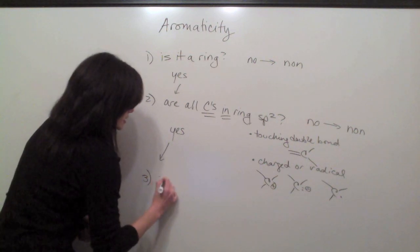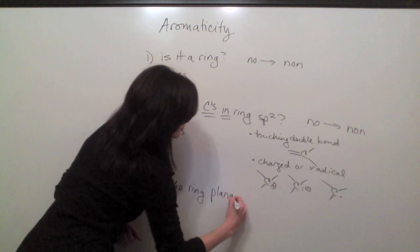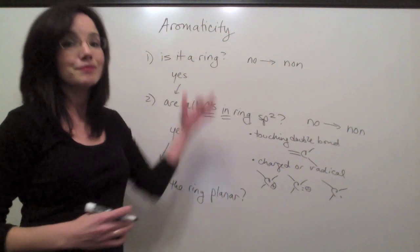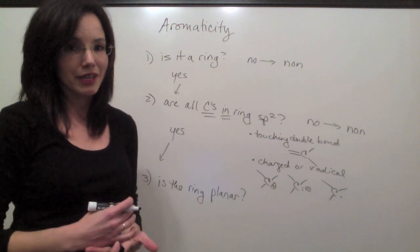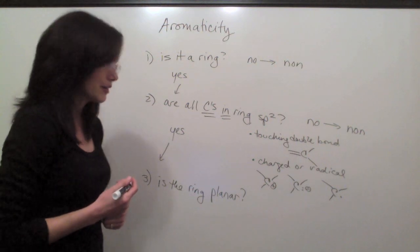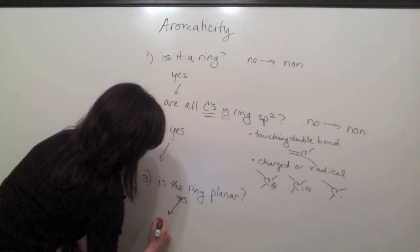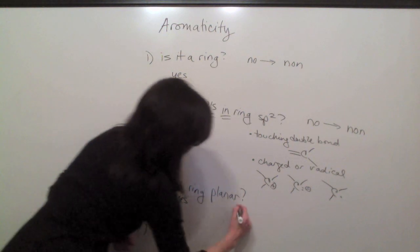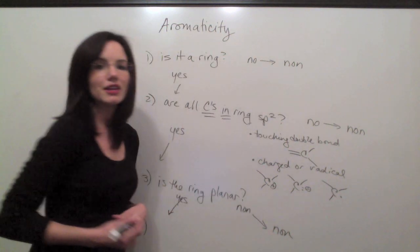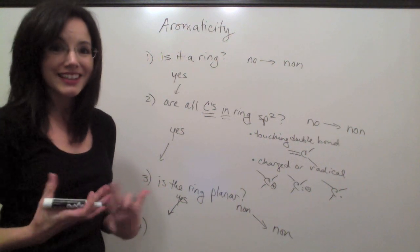Which is, is the ring planar? Now, almost every time, once you've gone through all these steps, you're going to have a planar compound. There's really only one type of compound that's going to be non-planar. And if it is planar, you're going to move on to step four. If it's non-planar, it's going to be non-aromatic. So let me take a minute and show you what a non-planar compound looks like and how you're going to know.